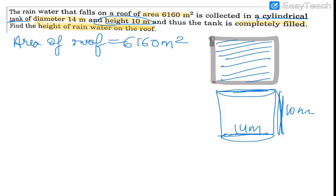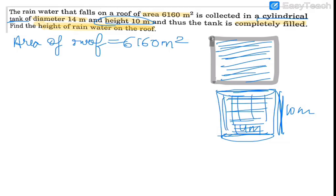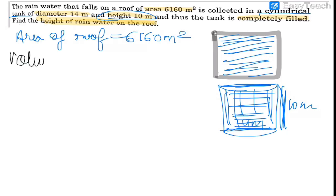Now, what we need to do is find the height of rainwater on the roof. We can observe that the rainwater that fell on the roof was collected in the cylindrical tank, which became completely filled. So we can say that the volume of water collected on the roof is equal to the volume of the cylindrical tank.